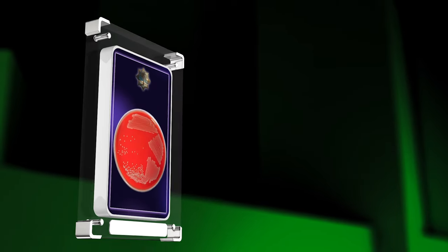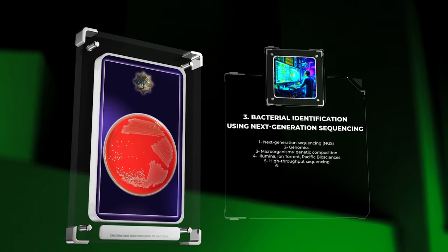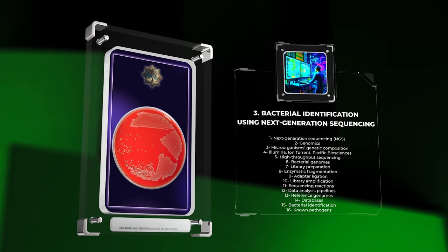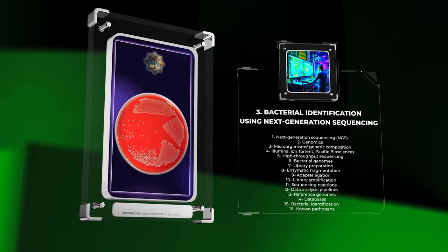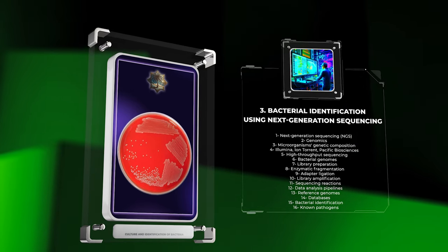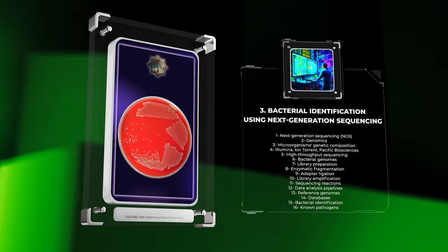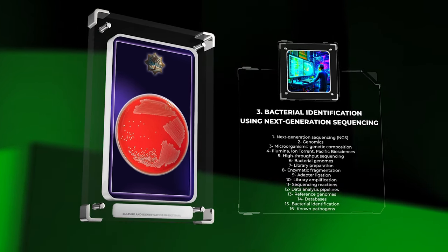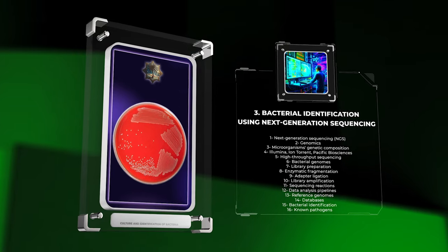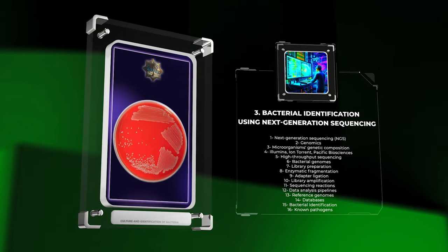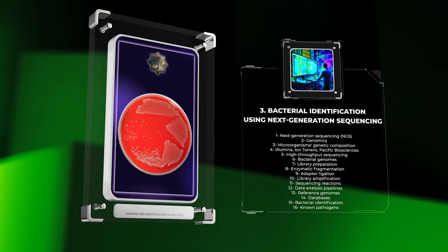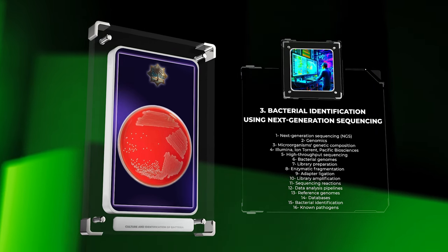Next-generation sequencing, NGS, has revolutionized genomics, providing unprecedented insights into microorganisms' genetic composition. NGS platforms like Illumina, Ion Torrent, and Pacific Biosciences offer high-throughput sequencing, enabling rapid analysis of bacterial genomes. Library preparation involves enzymatic fragmentation, adapter ligation, and library amplification. Sequencing reactions occur as libraries are loaded onto the sequencer.